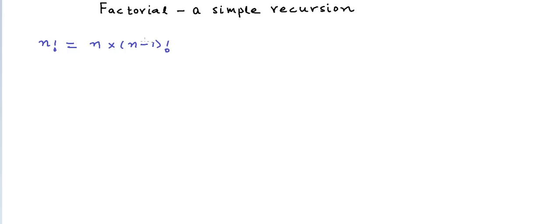0 factorial is a special case and it is equal to 1. So we will write it as: n factorial equals n into (n-1) factorial if n is greater than 0, and it equals 1 if n is equal to 0. So we have a function for n factorial here. When we write a function in a simpler form of itself, we call such a function a recursive function.